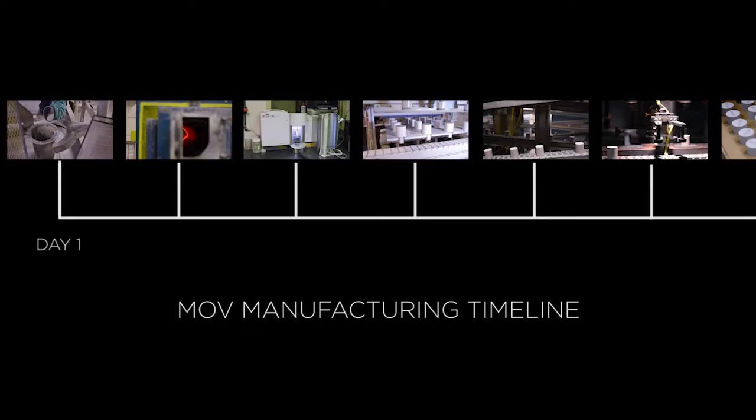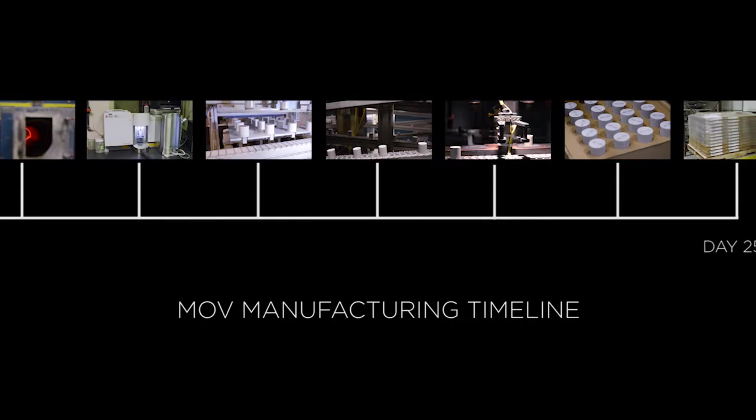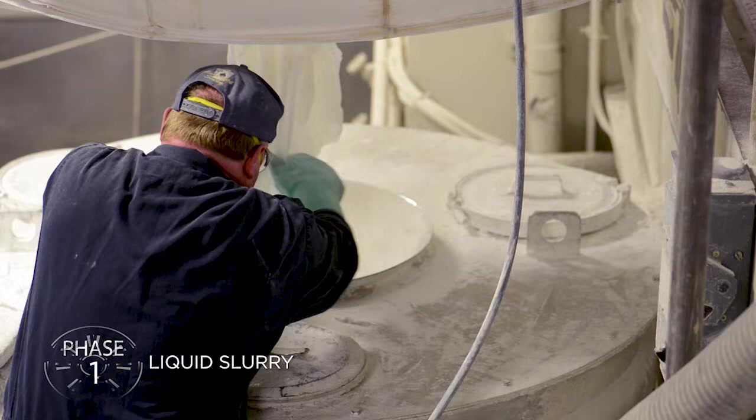The timeline from incoming material to finished MOV electrical testing is 25 days. Because of the long duration and complexity of processing, the cost impact of variations must be minimized by a significant number of quality checks throughout production. Finally, the incoming raw materials are released to production and begin the first phase of processing.